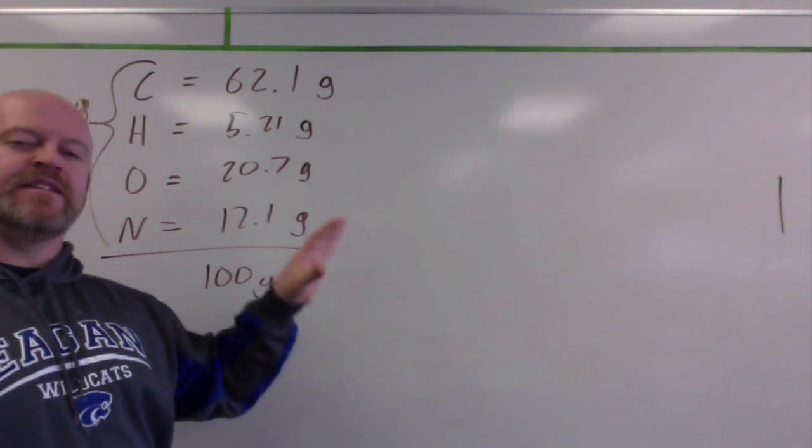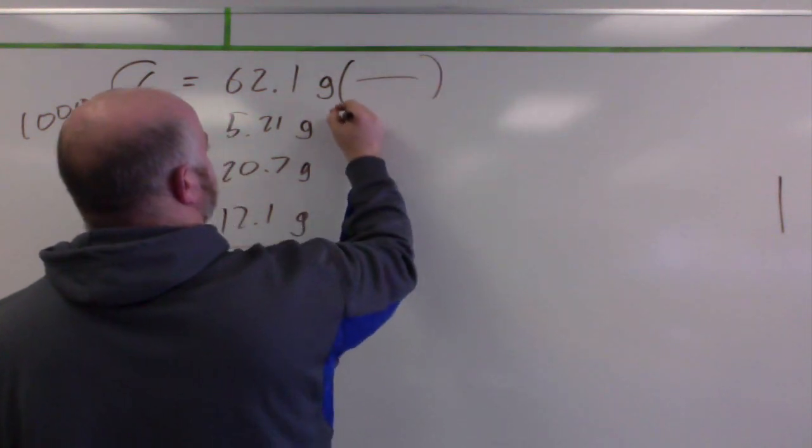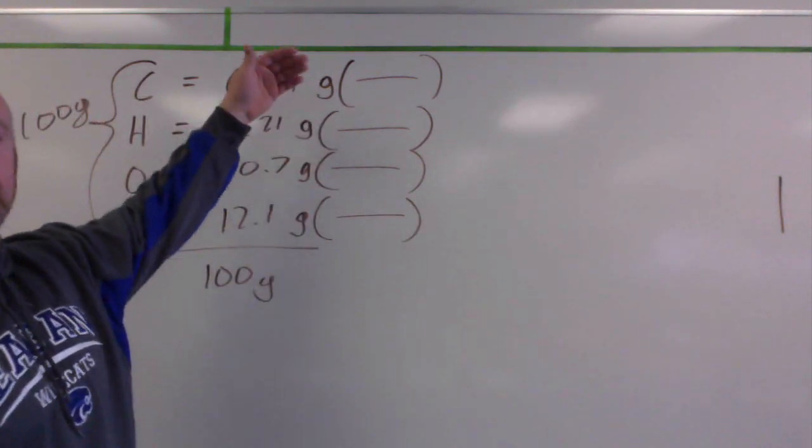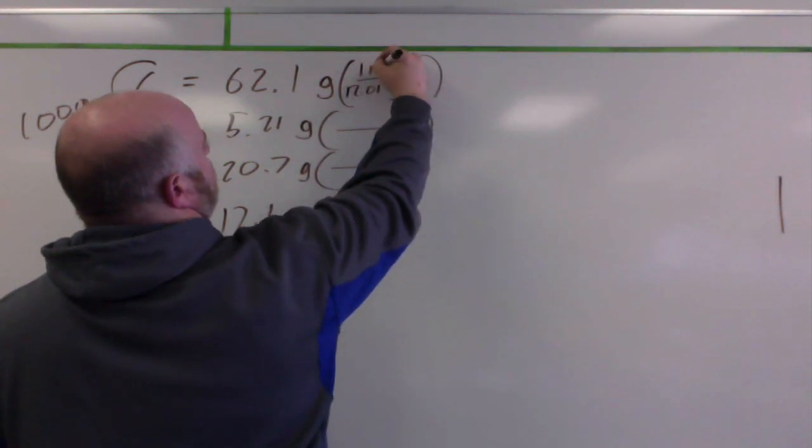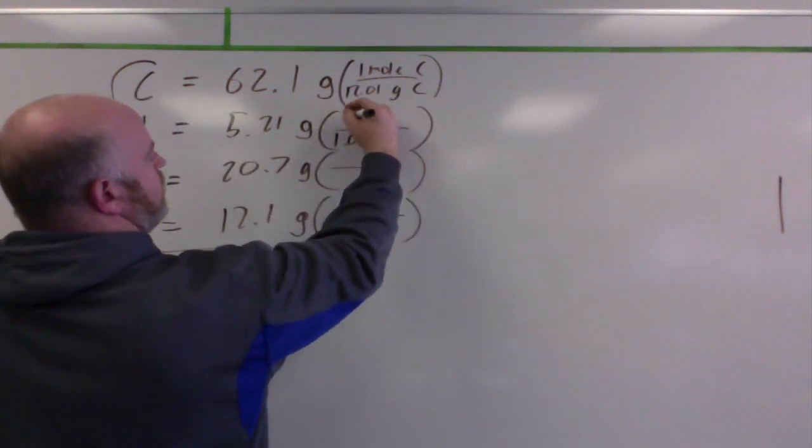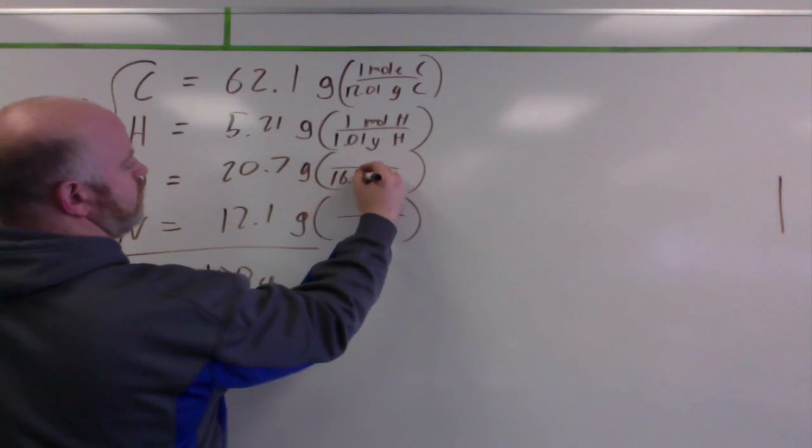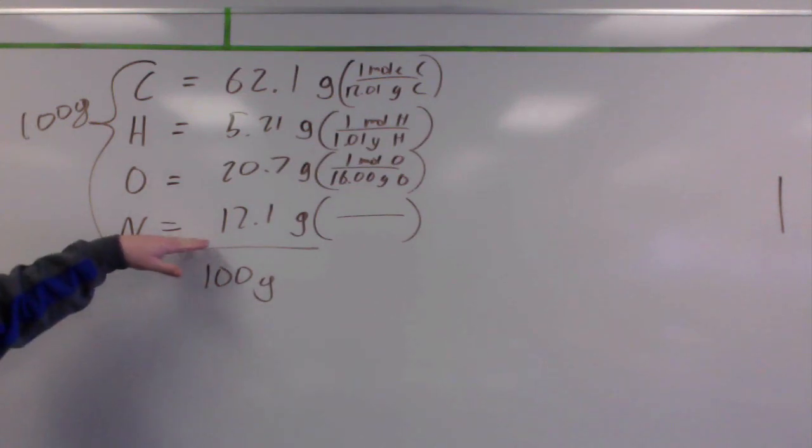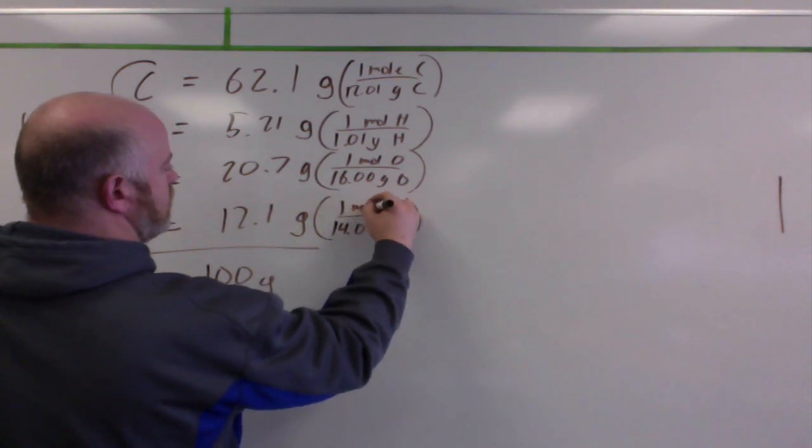The next is take these masses, and then convert to moles using the atomic mass. So we're going to do a real quick stoichiometry for each one of these based off their atomic masses. For carbon, we know that there is 12.01 grams per one mole for carbon. For hydrogen, it's 1.01 grams per one mole. For oxygen, we know it's 16.00 grams per mole. And for nitrogen, we know it's 14.01 grams per mole.